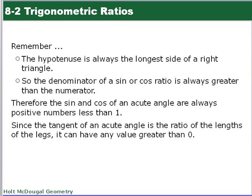All right, remember: the hypotenuse is always the longest side of the right triangle. So the denominator of sine or cosine is always greater than the numerator, meaning it's going to be less than 1. Therefore, the sine and cosine of an acute angle—can we say it enough times? It's important to know—positive numbers less than 1. For acute angles, that's all we're looking at right now. So it's going to be positive numbers less than 1. And since the tangent of an acute angle is the ratio of the lengths of sides, it can have any value greater than 0. So those are good things to know to help you check the answers.